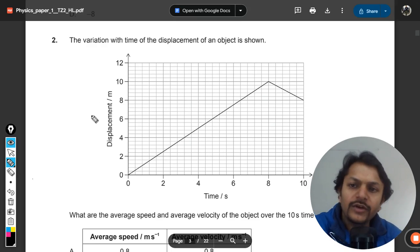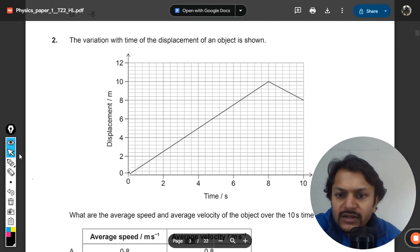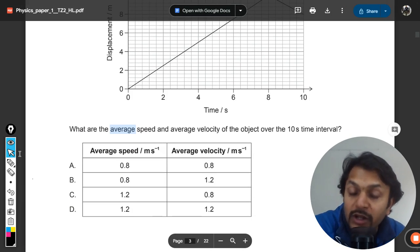Let's see what is in this question. The variation with time of the displacement of an object is shown. What are the average speed and average velocity of the object over a 10-second time interval?